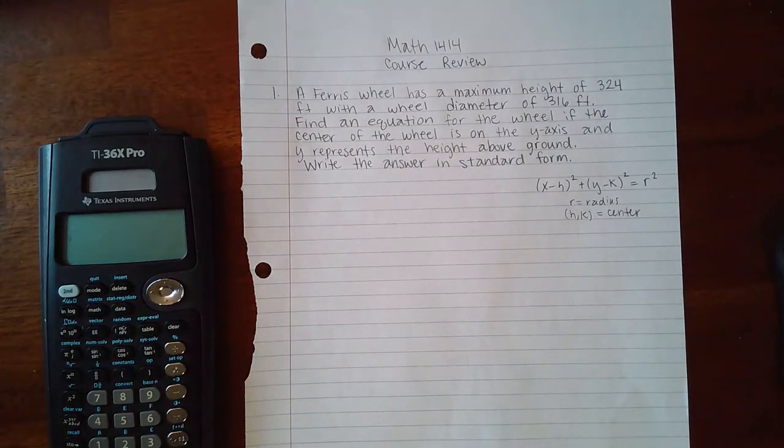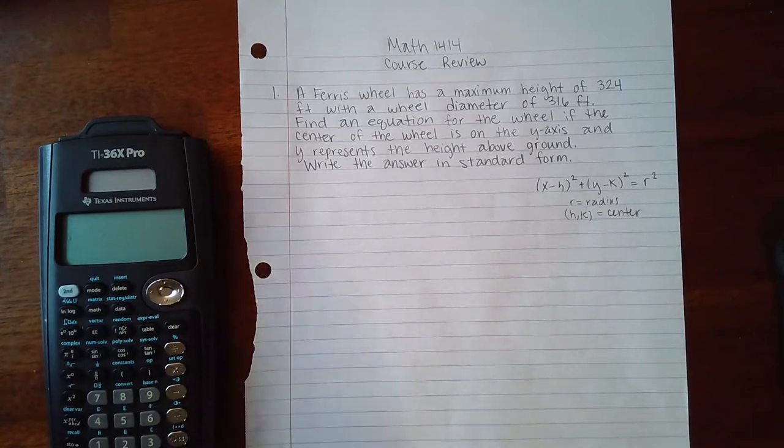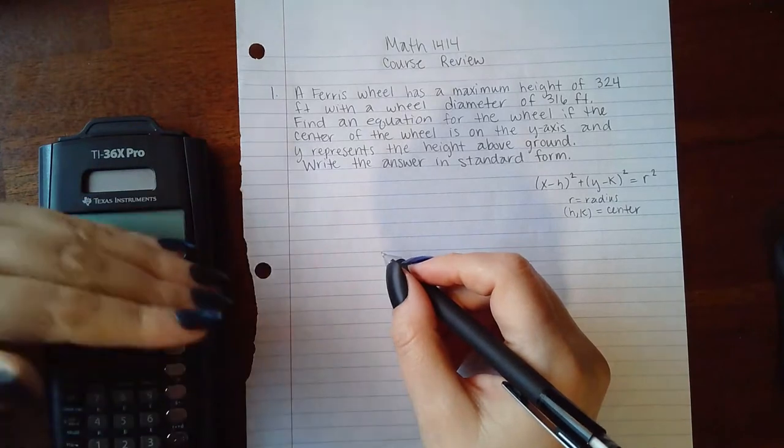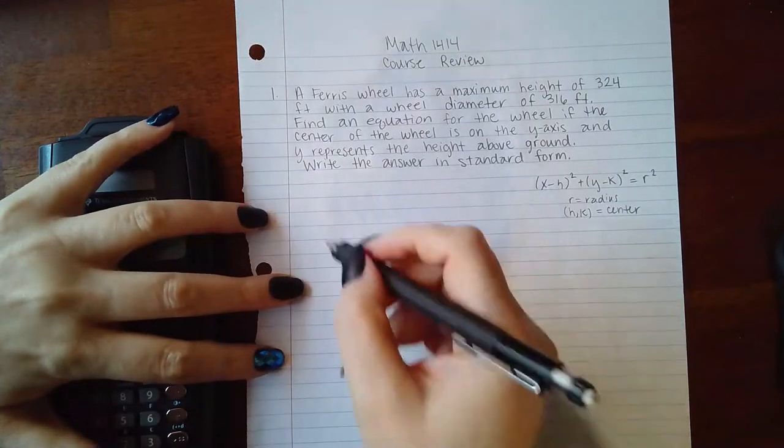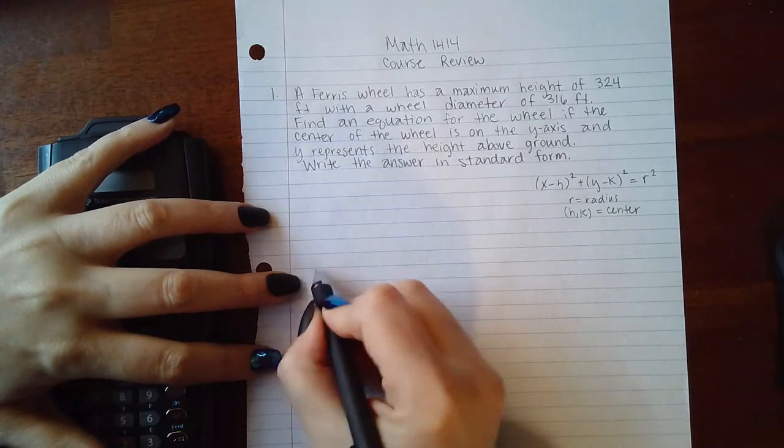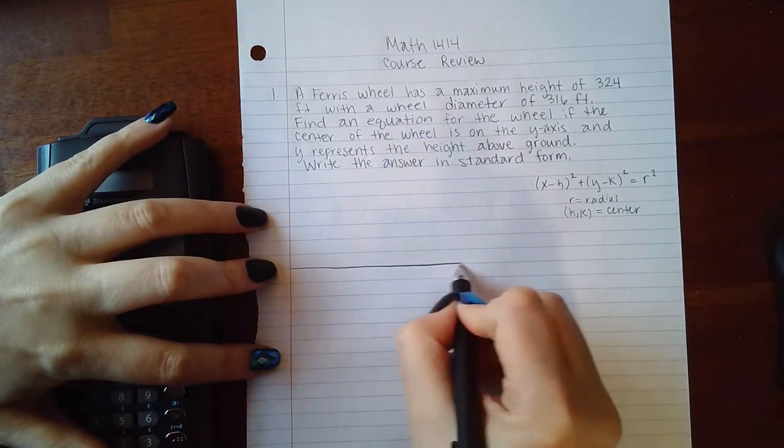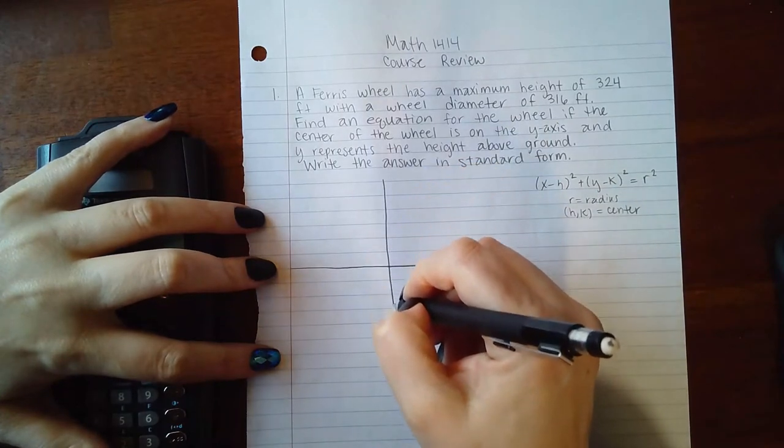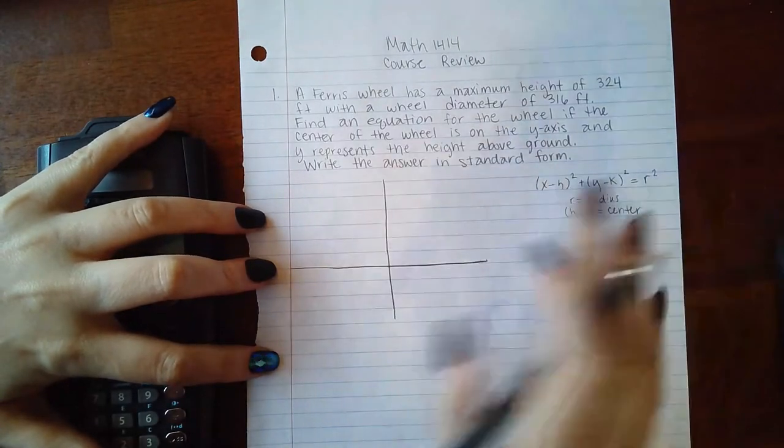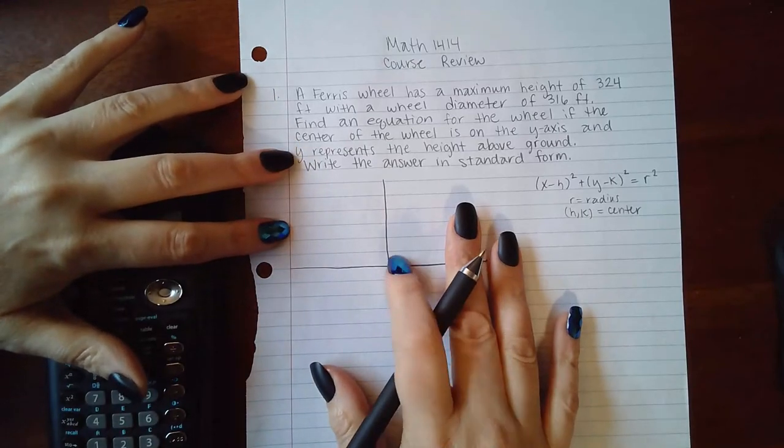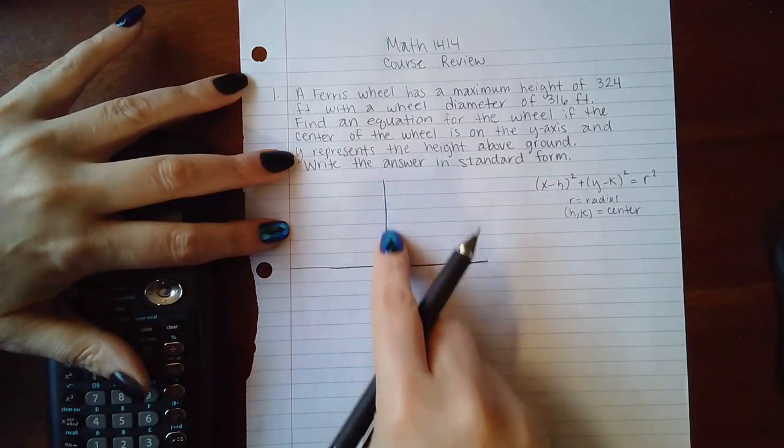Okay, so I definitely want to draw this, especially since they're talking about the y-axis. I definitely want to draw an image to represent this information so that I could help me identify what the radius and the center are. I am not great at drawing, especially circles. It said to imagine that the center of the wheel is on the y-axis, so the center is going to be somewhere here and then the wheel drawn around.